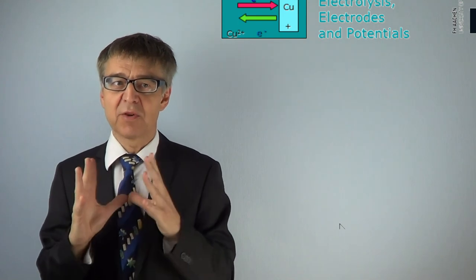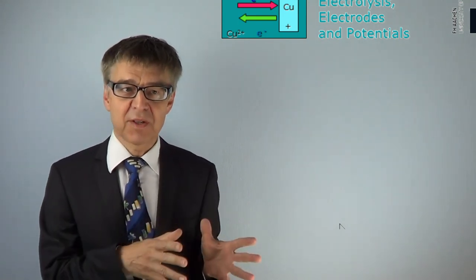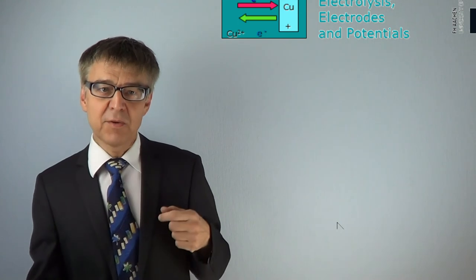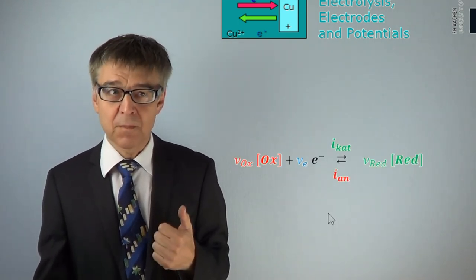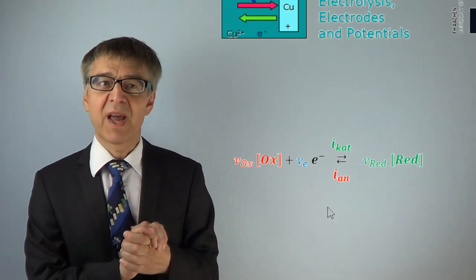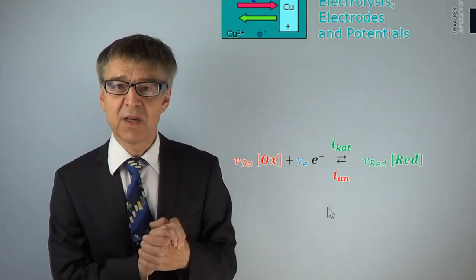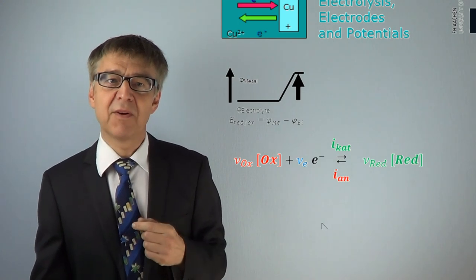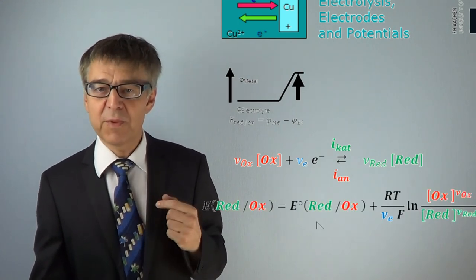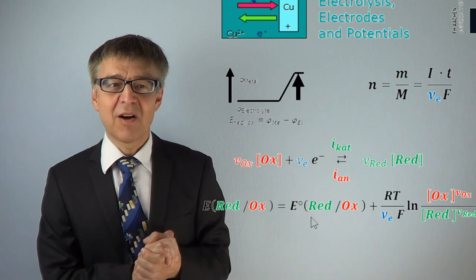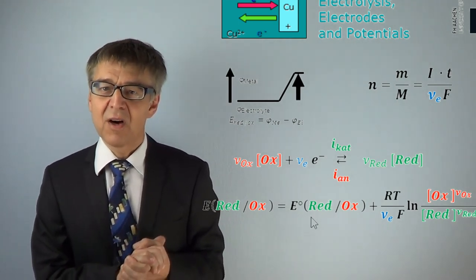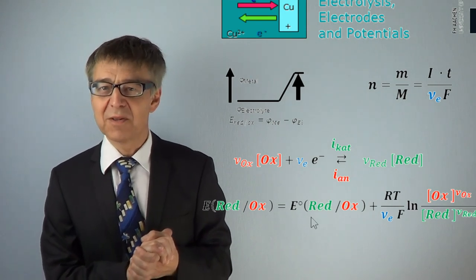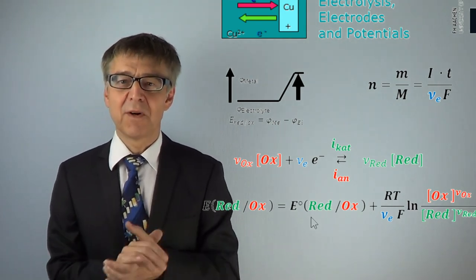To summarize: any combination of an electronic conductor and an ionic conductor gives an electrode. An electrode is characterized by the electron transfer reaction. In equilibrium, when cathodic and anodic currents are equal, the redox potential of the electrode may be calculated with the Nernst equation. Faraday's law of electrolysis describes the quantities of substances liberated or deposited on the electrode. Thanks for watching. Bye.